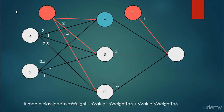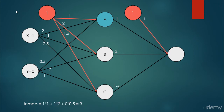For the A neuron, we store a temporary variable temp_A. It is equal to the bias node times the bias weight, plus the X value times the X weight to A, plus the Y value times the Y weight to A. So: the bias value is 1 and the bias edge weight to A is 1, giving 1×1. The second part is 1×2, because X equals 1 and the edge weight from X to A is 2. Plus 0×0.5, because Y equals 0 and the edge weight from Y to A is 0.5. So temp_A equals 3.